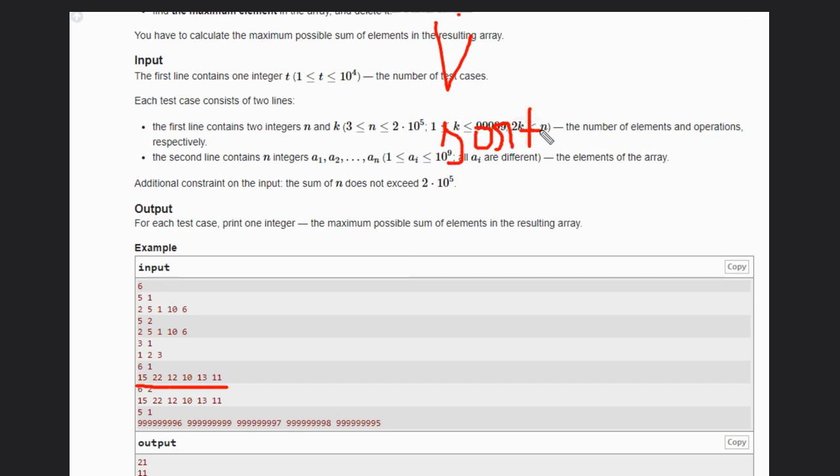Then it is easy to take minimum and maximum. Take two elements: first and second, both are minimum elements, and the last one is the maximum element. We will compare if the sum of the first two elements is less than the last one.